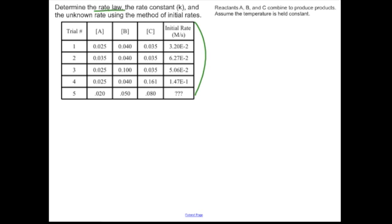There's a few things we're going to do in this problem. First, we're going to find the rate law. Part of the rate law has this constant in it, so we're going to find the rate constant. And I've left one of these blanks so we can predict what the initial rate ought to be for this fifth reaction.